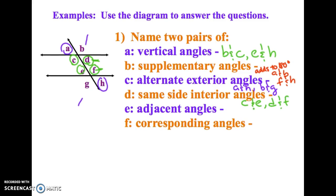Adjacent, there are a whole lot of possibilities here. You're trying to find any two angles that are next to each other. So for instance, A and C, those are right next to each other. E and F, those are right next to each other. There's a lot of choices.